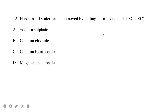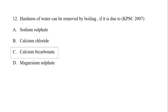Hardness of water can be removed by boiling if it is due to temporary hardness. There are two types of hardness: temporary hardness and permanent hardness. Temporary hardness is caused by bicarbonates and carbonates of calcium and magnesium. Permanent hardness is caused by sulfates, chlorides, and nitrates of calcium and magnesium. To remove calcium bicarbonate, boiling is sufficient, so the answer is option C.